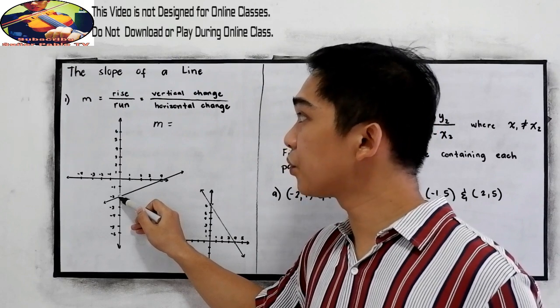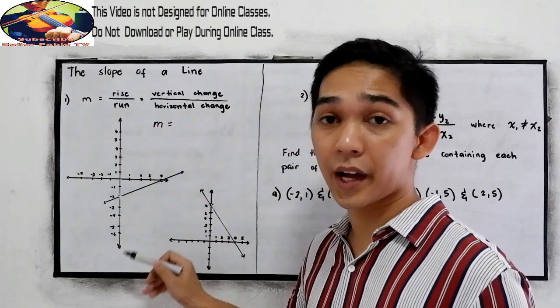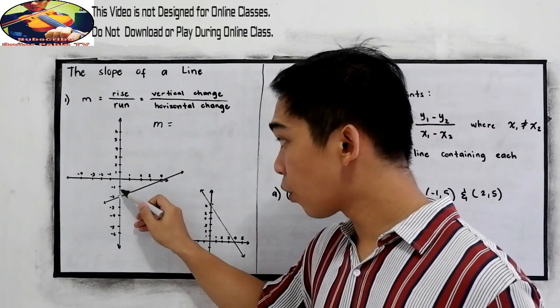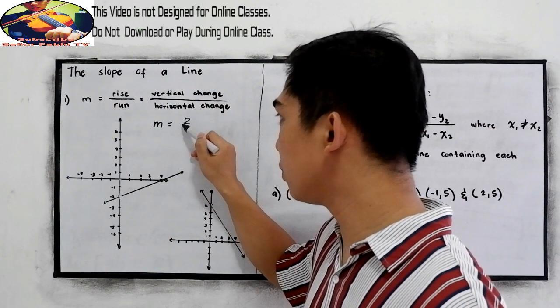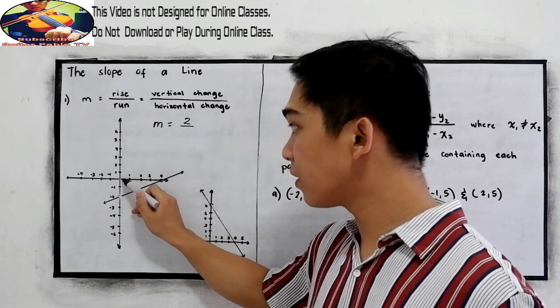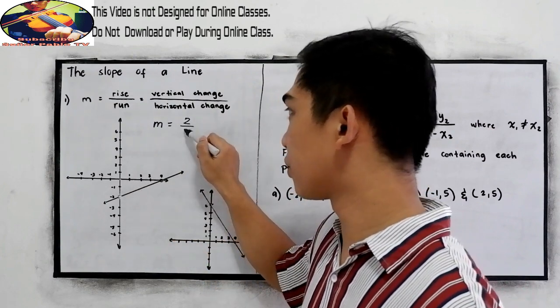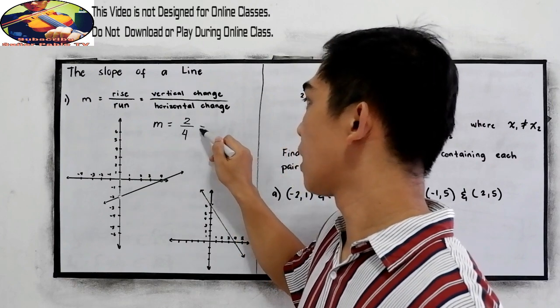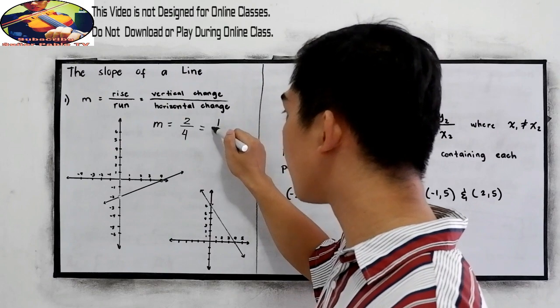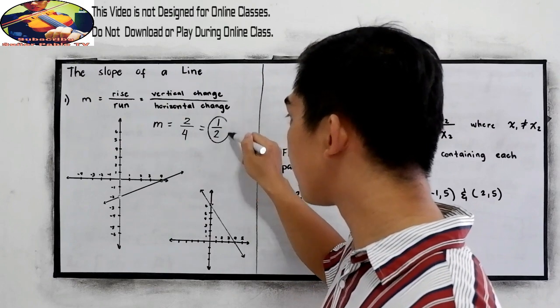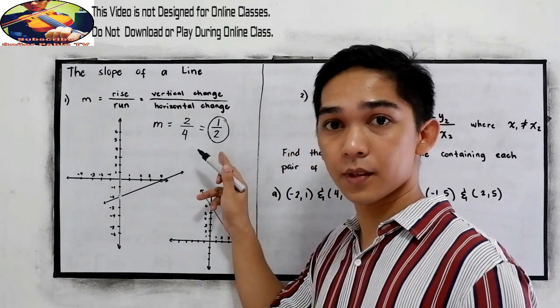And now we're going to test the rise over run. So rise, 1, 2, so that will become 2, over run, 1, 2, 3, 4. Reduce in lowest term, that is equal to 1 over 2. This will be our slope.